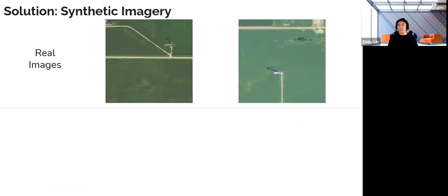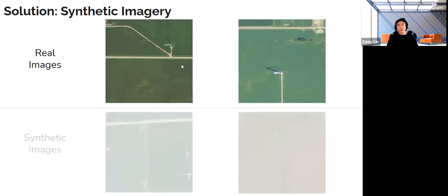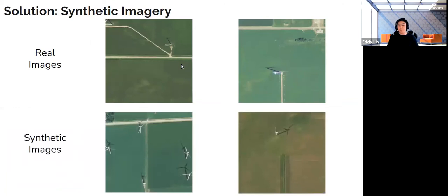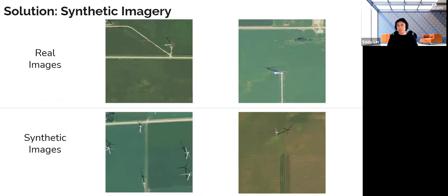To solve these two problems, we're going to introduce something really cool, which is synthetic imagery. That's going to be the main focus of our talk today. On the top, we have two real images — examples of what we feed into the deep learning model typically. And on the bottom, these are synthetic images that we've actually created to mimic the real images. We feed in both the real and synthetic images to the deep learning model so that it can learn from more generalized data to do well.